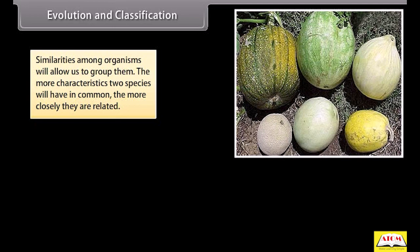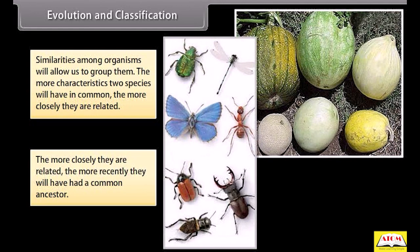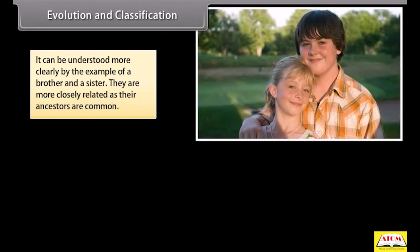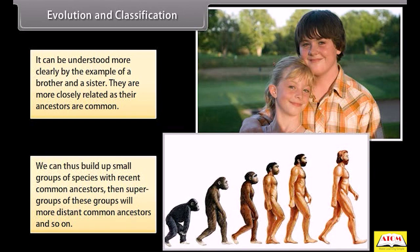The more characteristics two species have in common, the more closely they are related. The more closely they are related, the more recently they will have had a common ancestor. This can be understood by the example of a brother and sister — they are more closely related as their ancestors are common. We can thus build up small groups of species with recent common ancestors, then supergroups of these groups with more distant common ancestors, and so on.